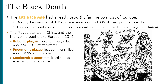The plague was actually three different diseases. The bubonic plague was the most common, and it killed about 50–60% of those who contracted it. The pneumonic plague was less common, but deadlier, killing about 90% of those who got it. And the septicemic plague, which was rare, was a near-certain death sentence.